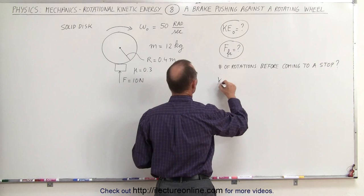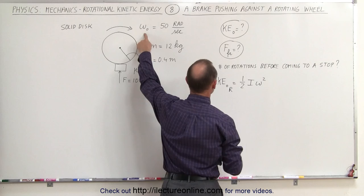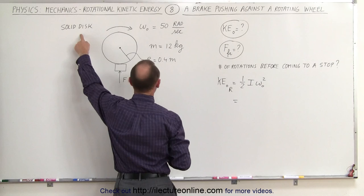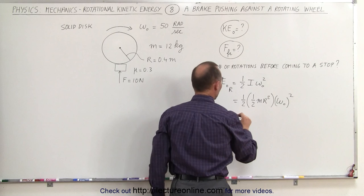Let's first find the initial kinetic energy. Since it's rotational kinetic energy, it equals one half times the moment of inertia times omega squared. We use the initial omega here. We also consider the wheel to be a solid disk, so the moment of inertia is one half m r squared, giving us one half times one half m r squared times omega initial squared.